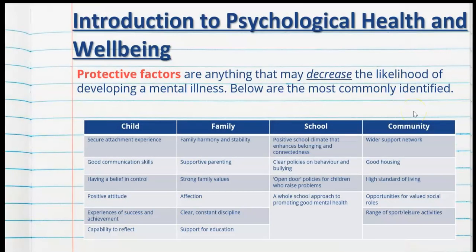Similar to that, recapping protective factors — anything that may decrease the likelihood of developing a mental illness. Again divided into the same four categories. These are things that decrease the likelihood or reduce the symptoms of mental health disorders and are very obviously positive in nature for the individual, the family and the community.